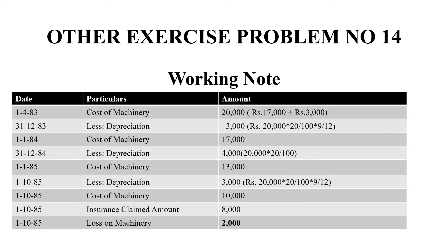The machinery cost is 20,000. On 31.12.83, depreciation is 3,000 rupees — that is 9 months depreciation calculated in the first year. So balance is 17,000. As on 1.1.84, the cost of the machinery is 17,000. So in the first year, we have calculated the depreciation.